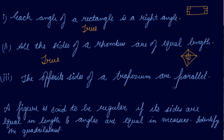Third: the opposite sides of a trapezium are parallel. In the trapezium we drew, one side is parallel to the opposite side, but the other two sides are not parallel to each other. So all opposite sides of a trapezium are not parallel — only one pair is. Therefore this statement is false.